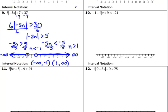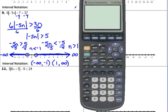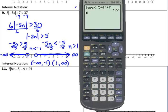One more time, let me remind you and show you how to check these. You pick a number in your shaded region — so let's pick 4. So: 6 times the absolute value of negative 5 times 4, close the parentheses, plus 7. That number is supposed to be greater than 37. It most definitely is. So chances are, if that worked, then we've got the right thing.